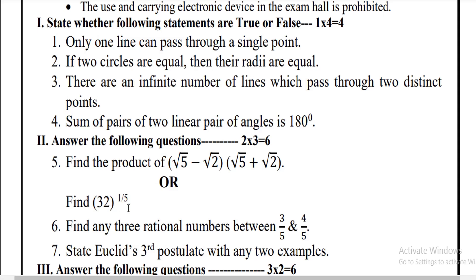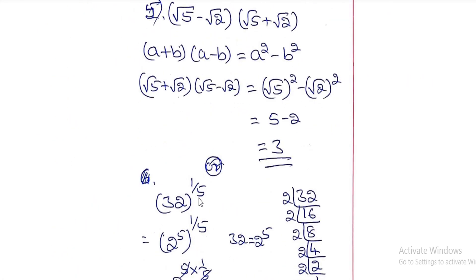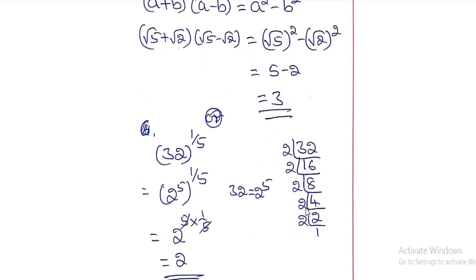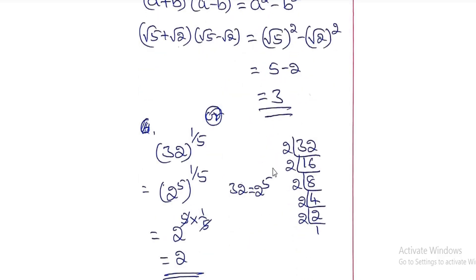The second option question: find 32 to the power of 1/5. Factorize 32: it gives 2 to the power of 5. So write 32 as 2⁵. Now substitute: (2⁵)^(1/5). Using the law of indices, A^m whole to the power n = A^(mn), so 5 × 1/5 = 1. Therefore the answer is 2¹ = 2.